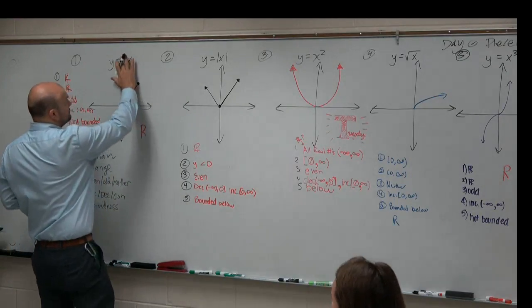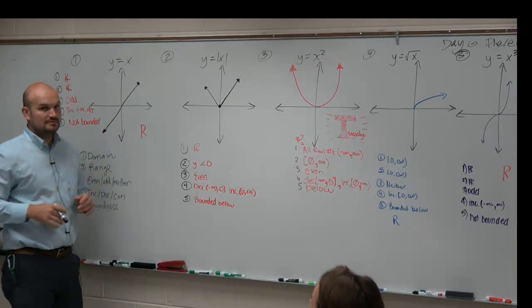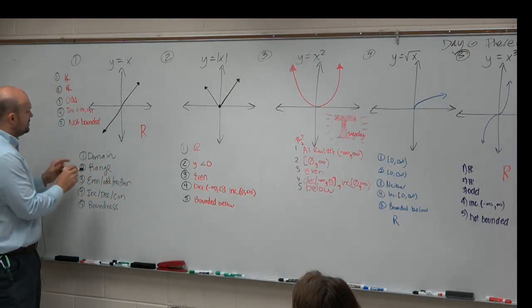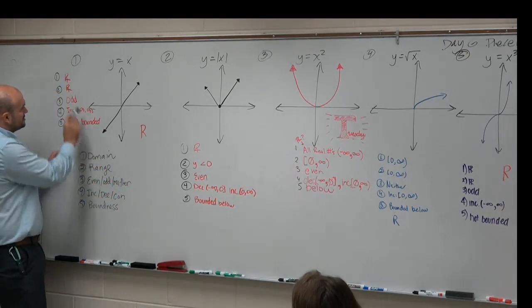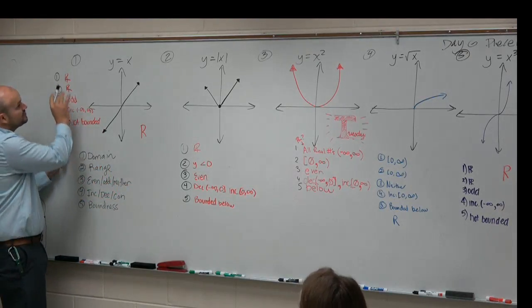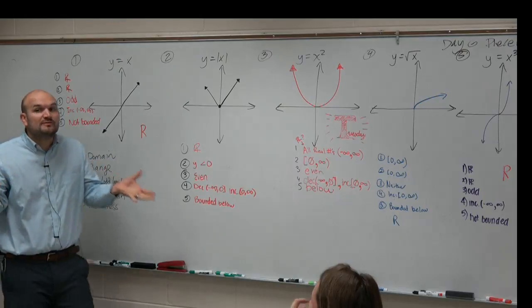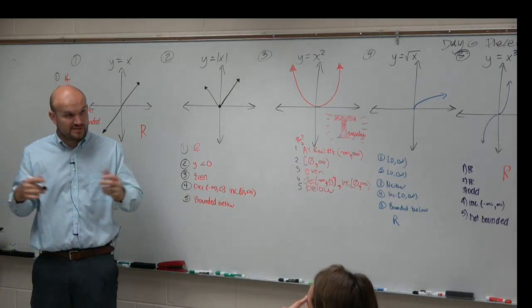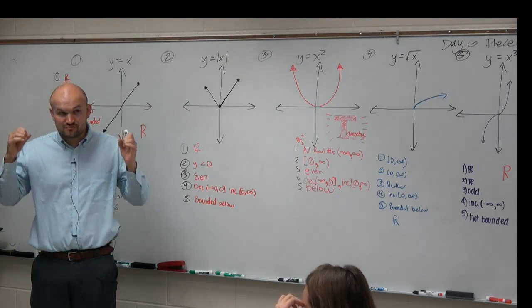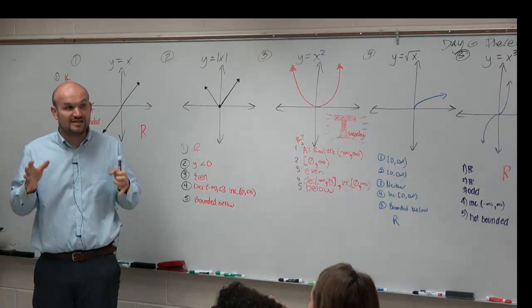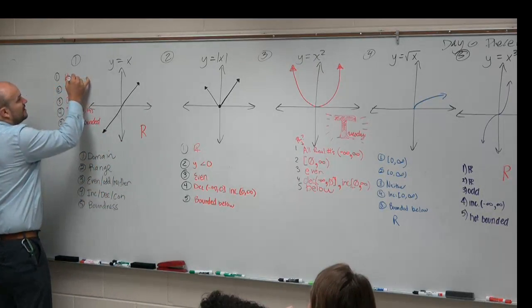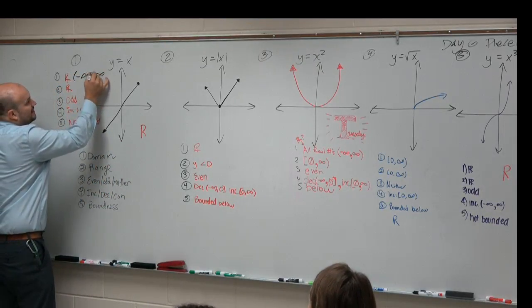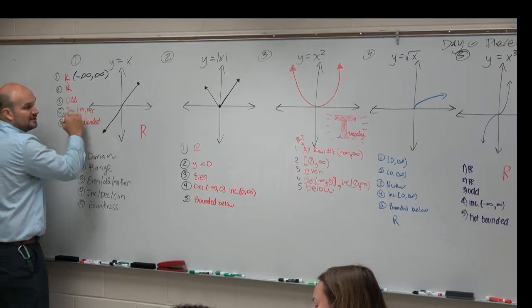Look over here, guys — this is the identity function. The identity function — we've got to make sure we have everything. So the identity function: they put the domain as all real numbers, which is perfectly fine. But I know in Algebra 2 we're so used to this. From now on, let's really get used to using interval notation: negative infinity to positive infinity.